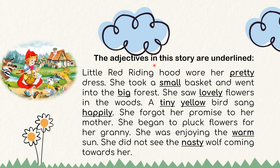The adjectives in this story are underlined. Little Red Riding Hood wore her pretty dress. She took a small basket and went into the big forest. She saw lovely flowers in the woods. A tiny yellow bird sang happily. She forgot her promise to her mother and began to pluck flowers for her granny. She was enjoying the warm sun and did not see the nasty wolf coming towards her.